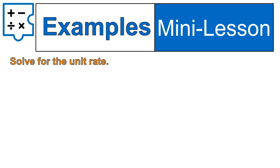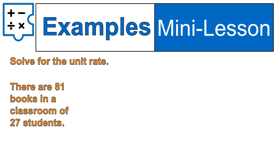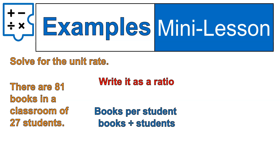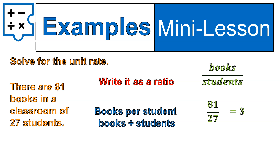I want to solve for the unit rate here. If there are 81 books in a classroom of 27 students, how many books per student are there? I'm going to write it as a ratio. Books per student means books divided by students, so books on top and students on the bottom — books is the numerator, students the denominator. 81 divided by 27 is equal to 3. Therefore, there are 3 books per student. That is my unit rate.